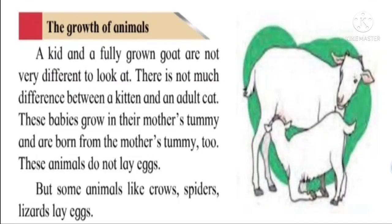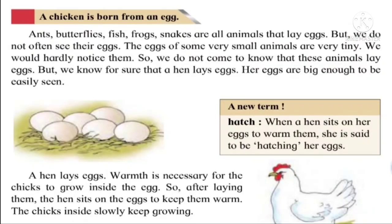There are some animals like crows, spiders, lizards, and many others which lay eggs. Animals like ants, butterflies, fish, frogs, and snakes are all animals that lay eggs. A common thing we all have seen — a chicken is born from an egg.